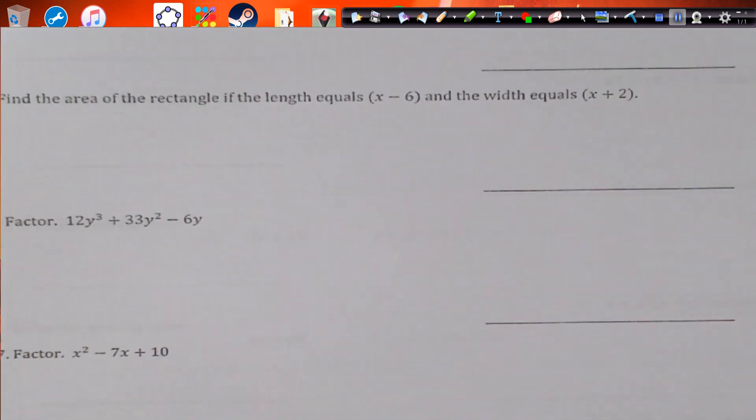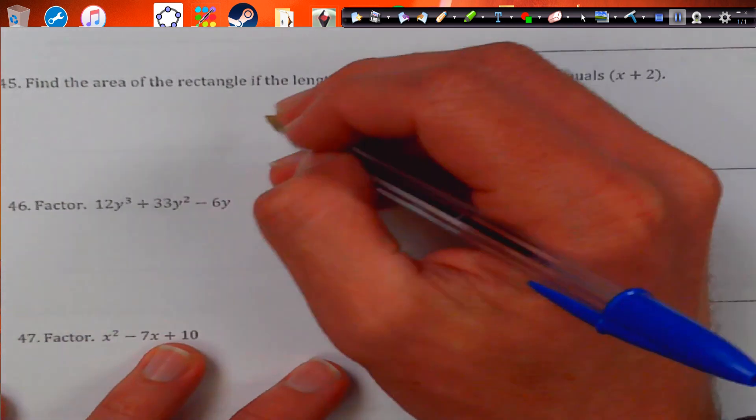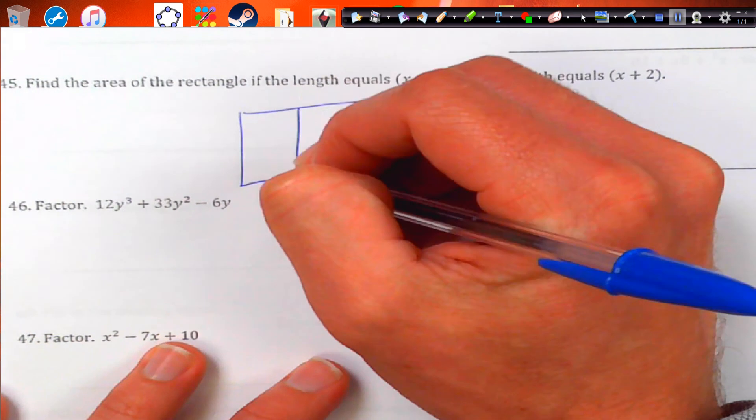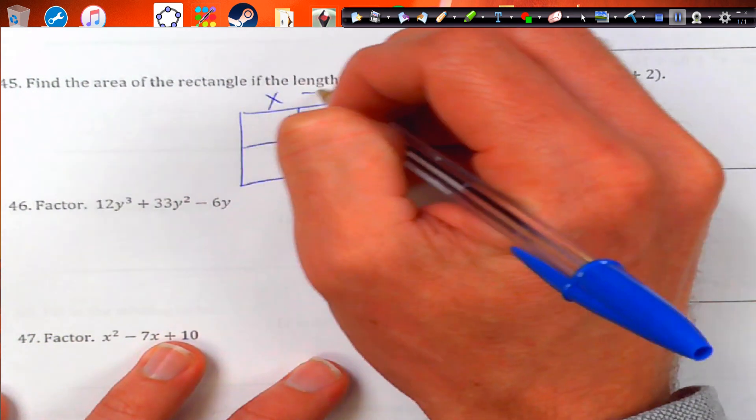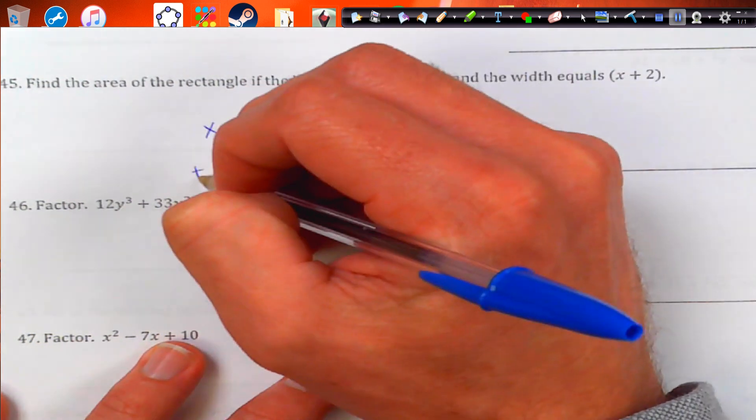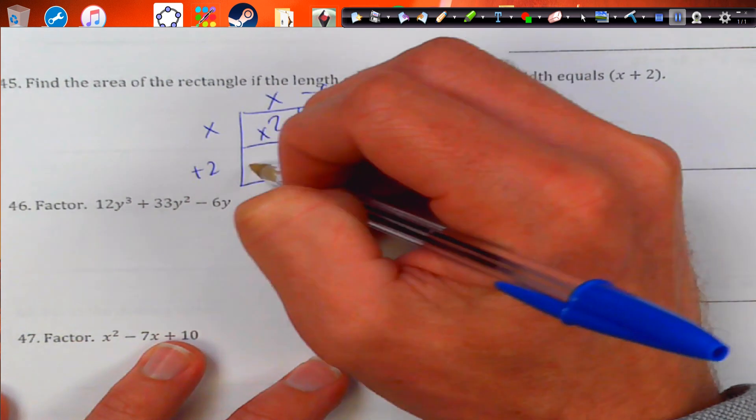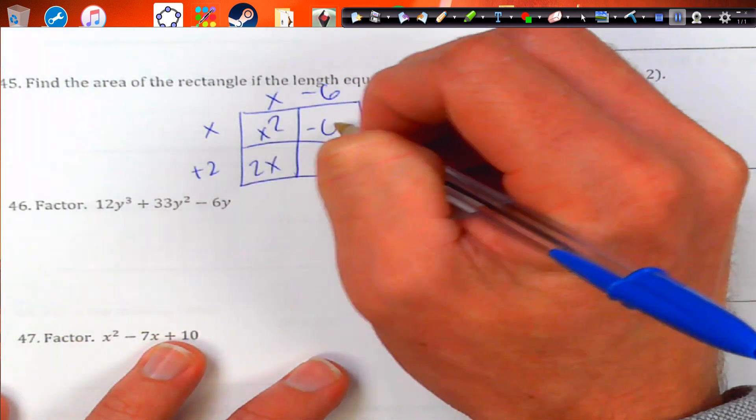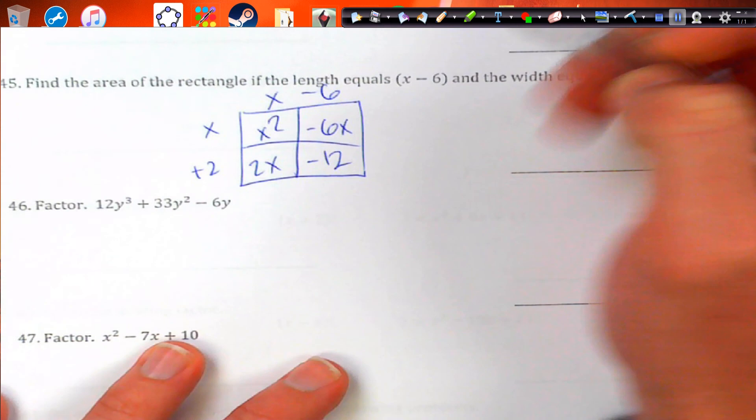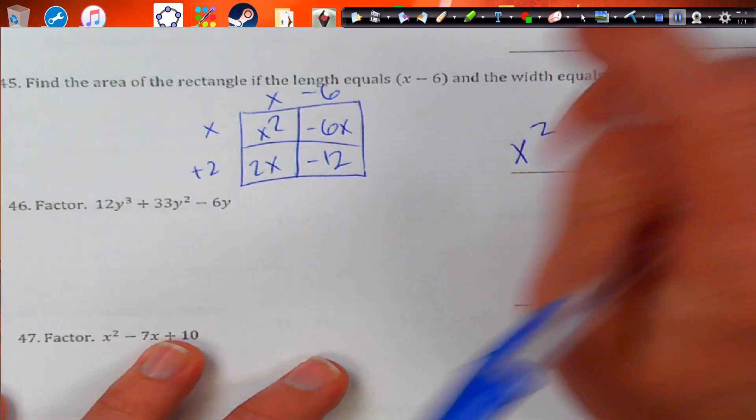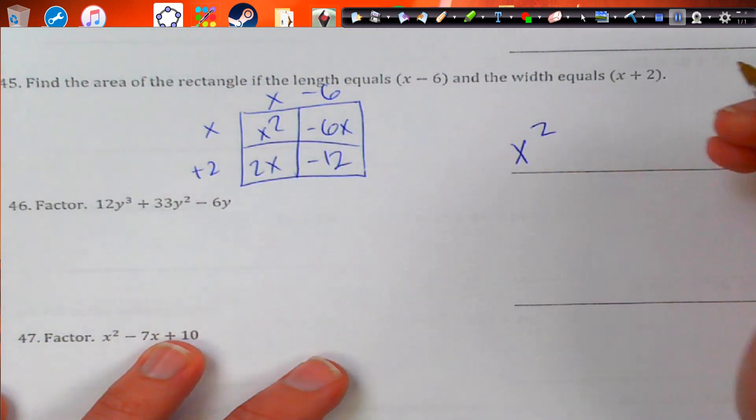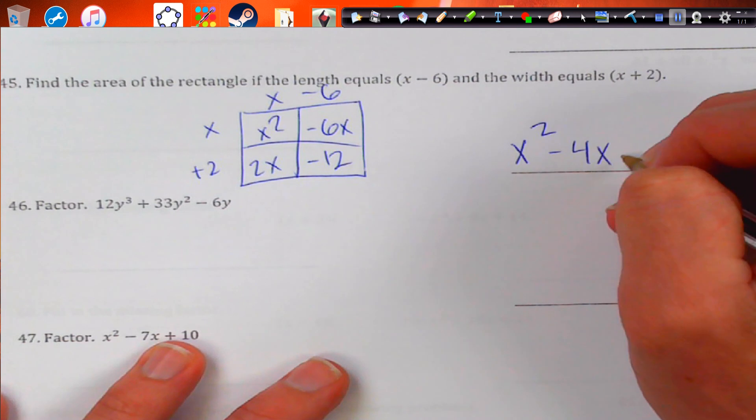Again, box method here. Multiplying. We get x squared. 2x. And negative 6x. And that's going to be negative 12. So, we get x squared. These combined. So, it's 2x and negative 6. It's going to be negative 4x. And negative 12.